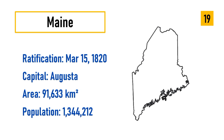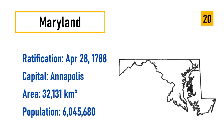Number 19: Maine, ratification March 15, 1820, capital Augusta, area 91,633 square kilometers, population 1,344,212. Number 20: Maryland, ratification April 28, 1788, capital Annapolis, area 32,131 square kilometers, population 6,045,680.